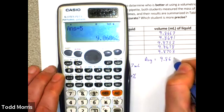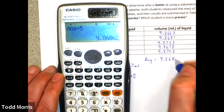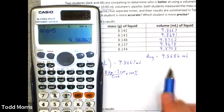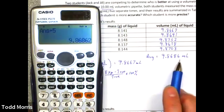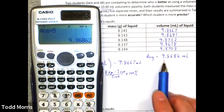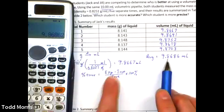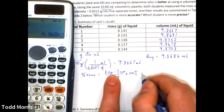So, on average, Jack delivered about 9.8686 milliliters with a 10-milliliter volumetric pipette. This value, though, 9.8686 milliliters, this would be our experimental value. This is our best value.